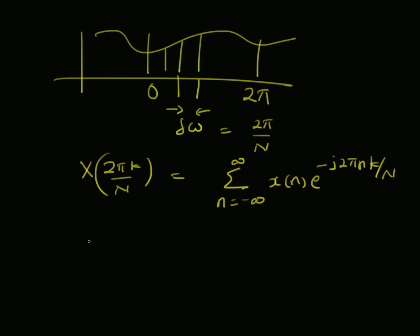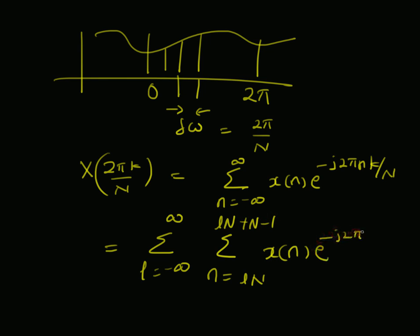We can rewrite this sum as a double summation: Σ from l = −∞ to +∞, Σ from n = lN to lN+N−1 of x(n) e^(−j2πnk/N). That means we rewrote this infinite sum into a double sum where index l changes from −∞ to +∞ — i.e., it is written as a sum of smaller sums, each with a finite number of terms.